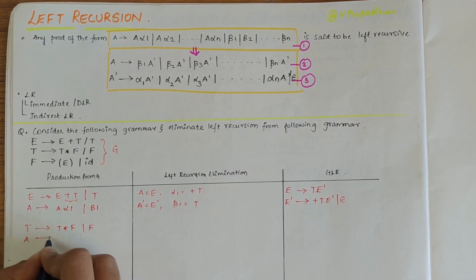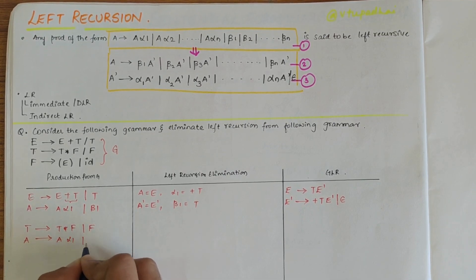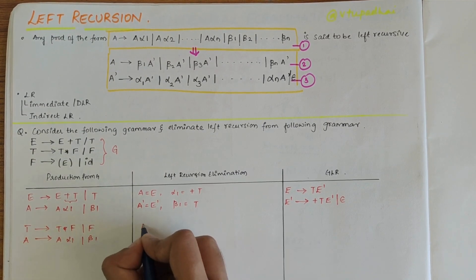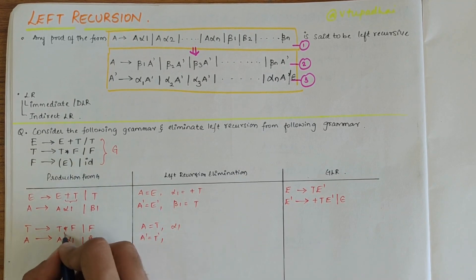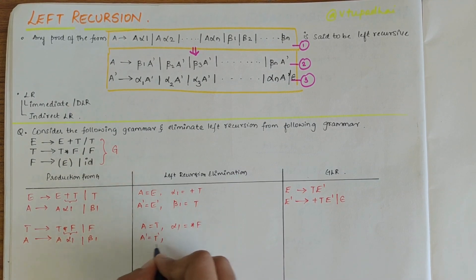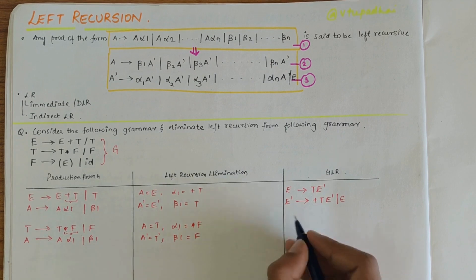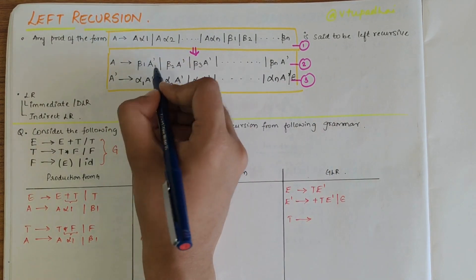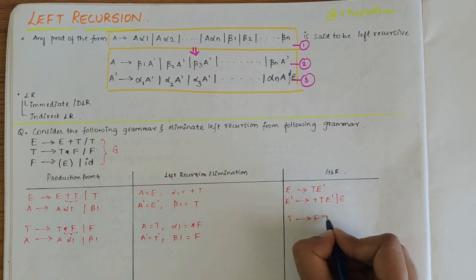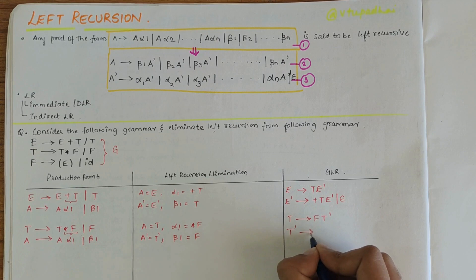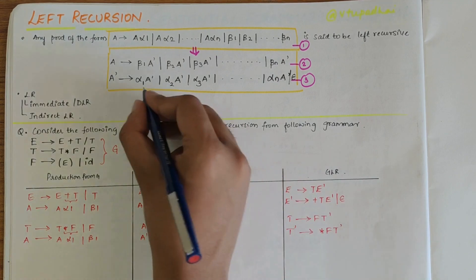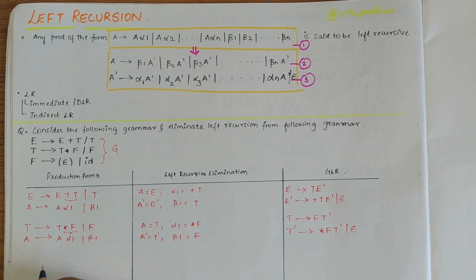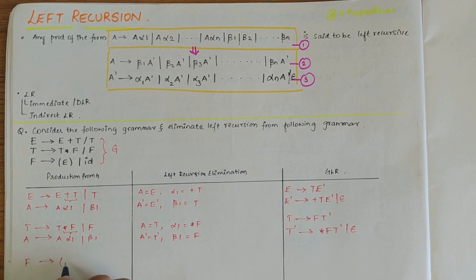Now let's move on to the next production: T derives T-star-F and F. Here A is T, A-bar is T-bar, alpha-1 is star-F, and beta-1 is F. So equation 2 is: T derives F T-dash, and equation 3 is: T-dash derives star-F T-dash, and also epsilon.